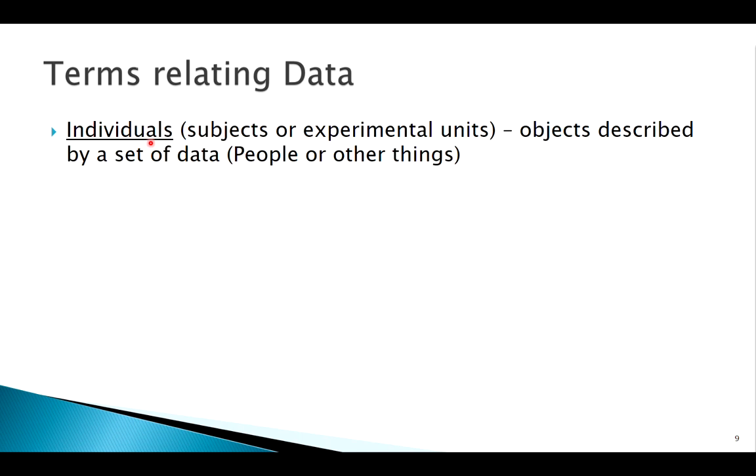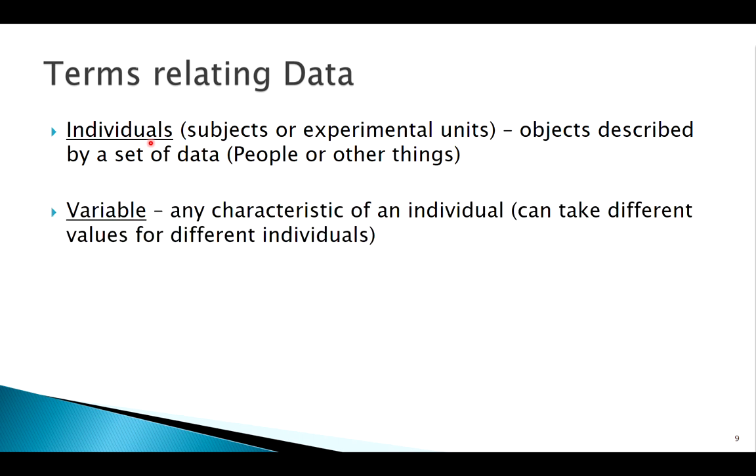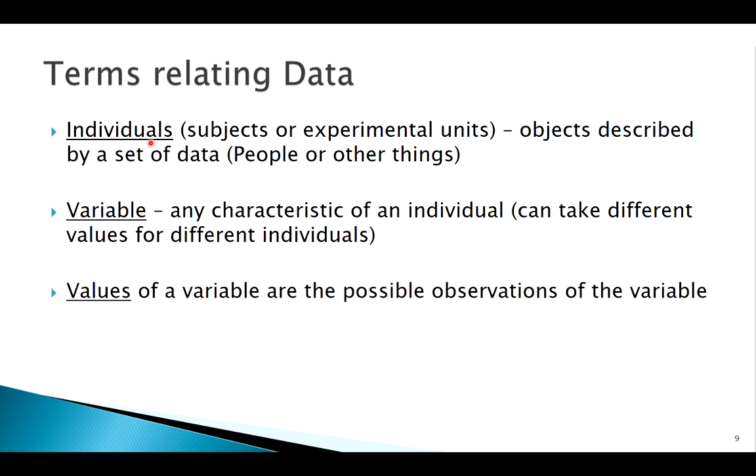Let's quickly look at some other terminology. Usually we call the people or the things - the objects, the animals, whatever it is that are being studied - individuals. They can also be called subjects or experimental units. The characteristic of these individuals that we're interested in we call our variable. The values of that variable are all the possible ways that variable could turn out. So therefore our data is a collection of the values of these variables from these individuals in my sample from the population. That's kind of our flow - that's where our data comes from.